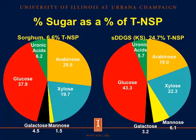Moving to sorghum and sorghum DDGS: sorghum has 6.6% total NSP, of which 25.8% is arabinose, 19.7% is xylose. Increasing to sorghum DDGS at 24.7% total NSP, 19% is arabinose, 22.3% is xylose, and 43.3% is glucose. The same trend holds — as we go from sorghum to sorghum DDGS, the ratios of sugars remain similar. We can conclude that glucose, or cellulose, makes up the majority, followed by arabinose and xylose as arabinoxylans, with other sugars making up the rest.